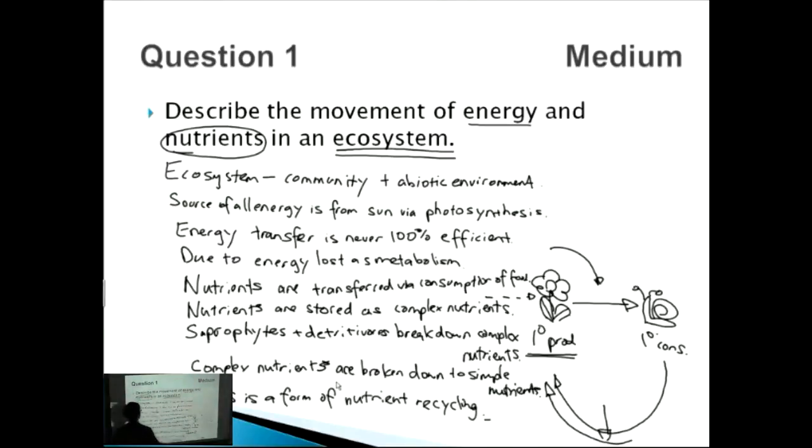So we did jump around a little bit, but the bottom line is that firstly, you want to define ecosystem. And secondly, you want to talk about energy. And finally, you want to talk about nutrients. And for this question, which is a medium question, you're looking for around about six to seven points. So let's see how many we've got. We've got nine different points that should give us four marks.